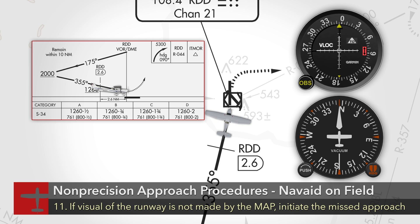Upon arrival at the missed approach point, if the required visual references are not distinctly visible and identifiable, immediately initiate the missed approach procedure as published or as directed by ATC.